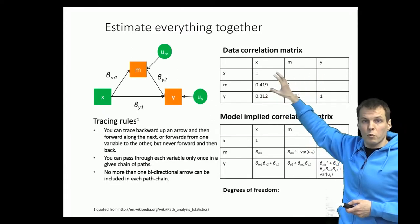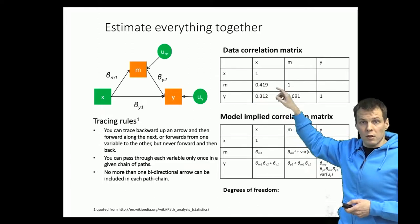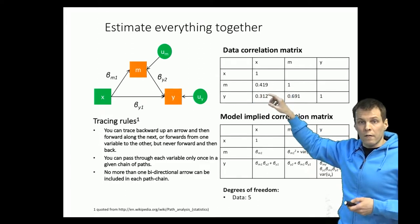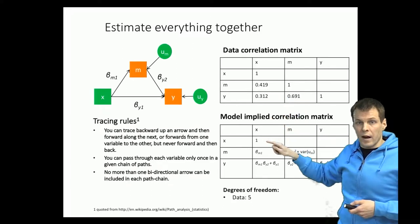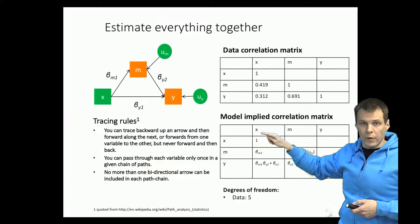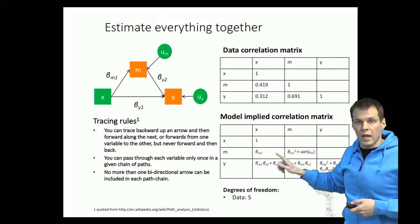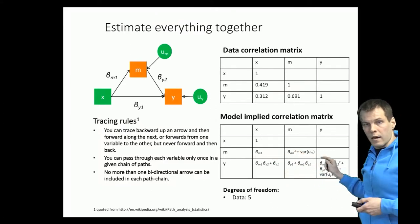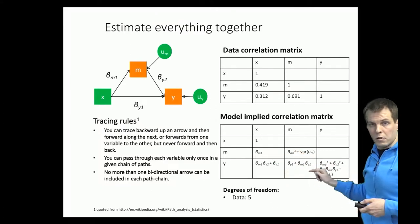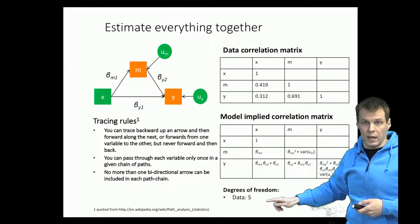We don't look at the individual observations. Our units of information are the correlations that depend on the model parameters. Importantly, the variance of x doesn't count because it doesn't depend on any of the model parameters. So we have five elements: variance of m, variance of y, and all the correlations that depend on the model — giving us five units of data.